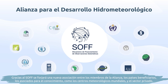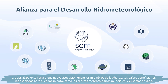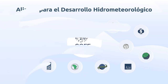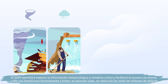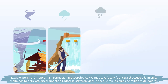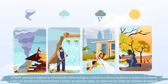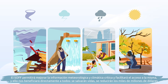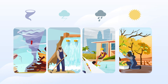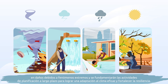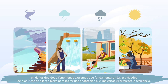The SOF will create a new partnership between the members of the Alliance, beneficiary countries, knowledge partners such as global weather centers, and the private sector. The improvement of and better access to critical weather and climate information enabled by the SOF will directly impact all of us — saving lives, minimizing the billions of dollars of damages due to extreme events, and informing long-term planning for effective climate adaptation and to strengthen resilience.